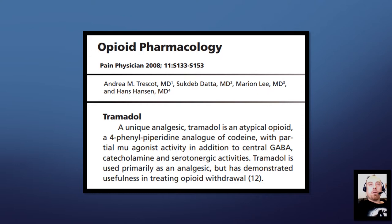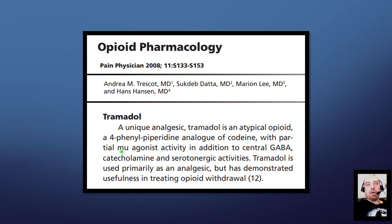The first one is in Pain Physician in 2008, called Opioid Pharmacology. It states: 'A unique analgesic, tramadol is an atypical opioid, a 4-phenylpiperidine analog of codeine with partial mu agonist activity in addition to central gamma-aminobutyric acid, catecholamine, and serotonergic activities.' So it has a lot of nonspecific receptor effects. However, they're saying it is a mu partial agonist. Remember, the mu receptor is the main opioid receptor that appears to be related to pain relief or analgesia.